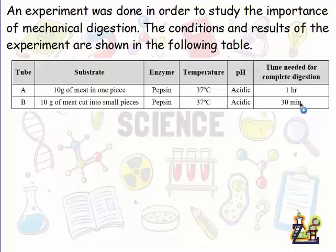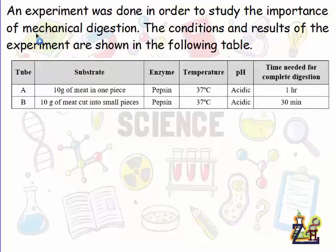The manipulated factor is the size of the meat pieces — in tube A it was in one piece, while in tube B it was cut into small pieces. This resembles mechanical digestion in the body, such as mastication, chewing, or the churning of the stomach, which cuts food into small pieces.